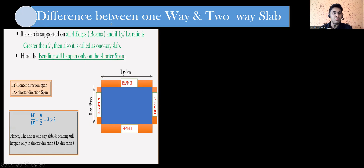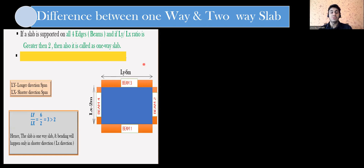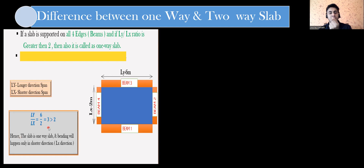For a crisp interview answer, keep it simple and to the point. First point: a one-way slab is one where bending happens in only one direction. Second point: if a slab is supported on all four edges and the ly/lx ratio is greater than 2, it is a one-way slab. For example, ly is the longer span and lx is the shorter span — six divided by two is three, and three is greater than two, hence it is a one-way slab.